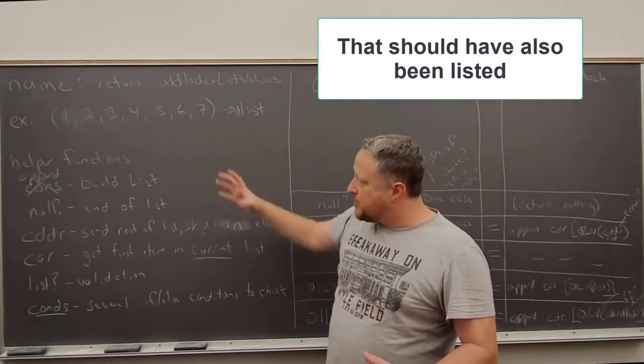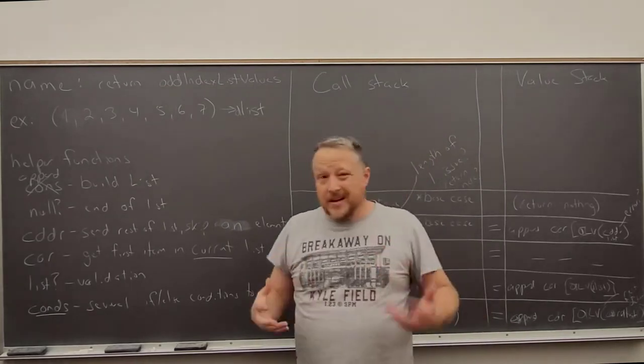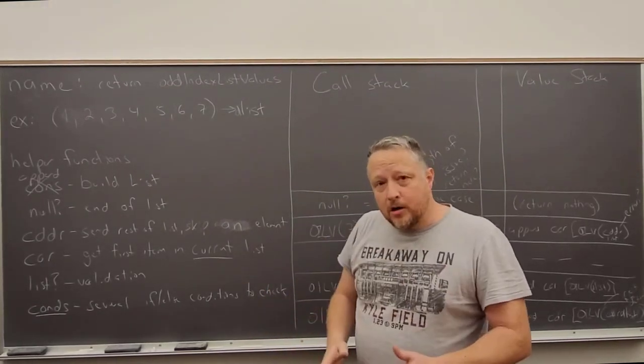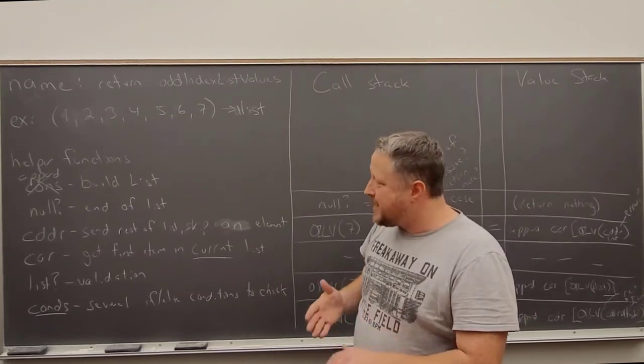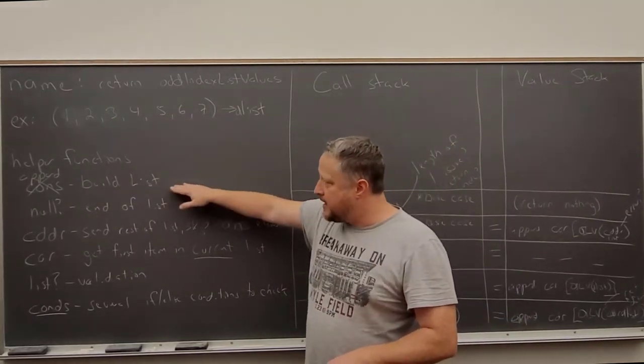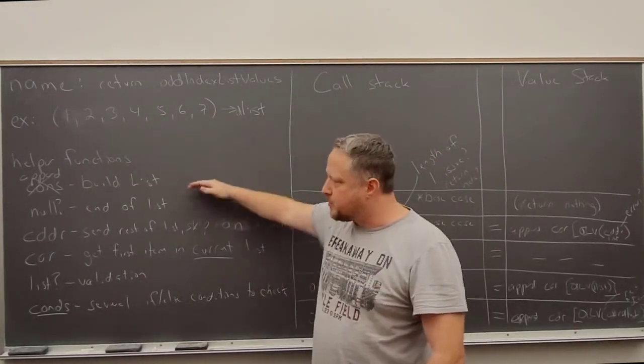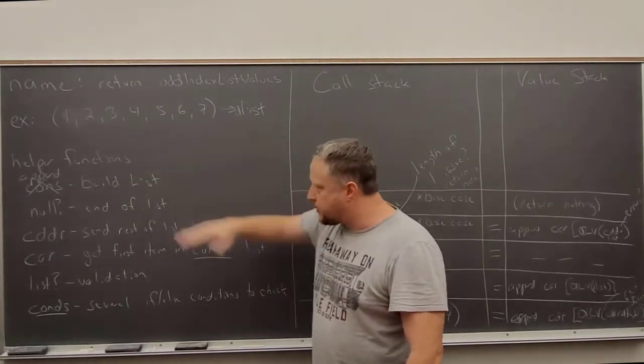The other part that I'm going to do is list all of my helper functions that we kind of already know actually through either the topic that we're currently covering or the topics that came preceding here. That's going to be append, which I really originally thought might have been cons. So notice my thought process is being thought out here. I explain what it's going to do. Build the list.